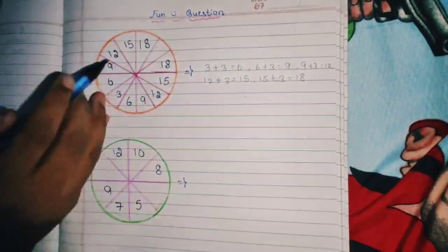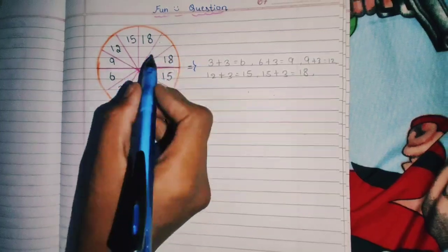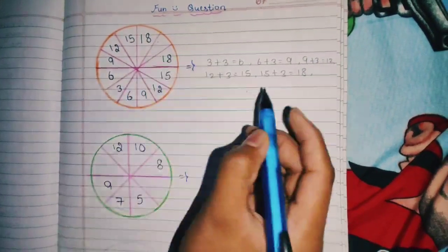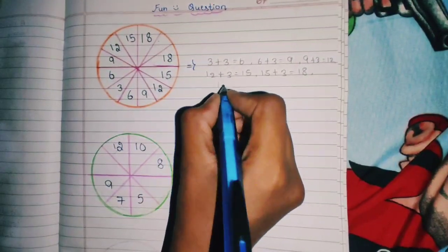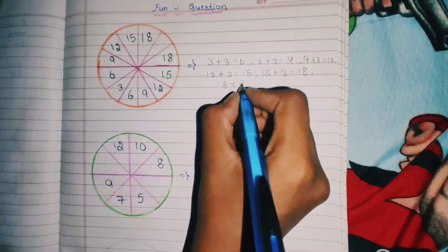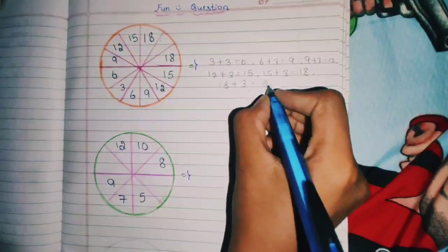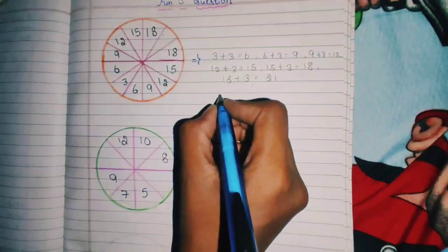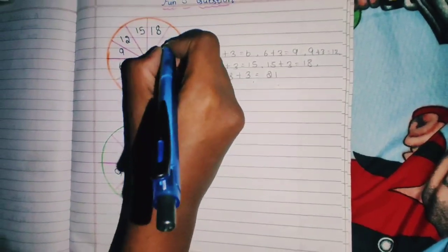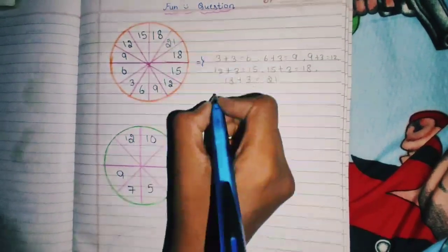And the same as it is for this side. Now we have to find this missing number. Now we have to add 18 plus 3. We get the answer 21. So the missing number is 21.